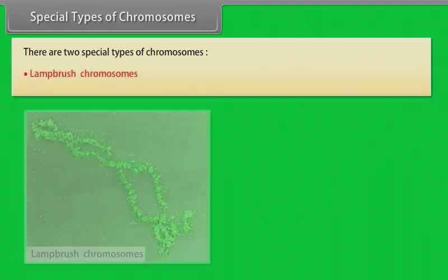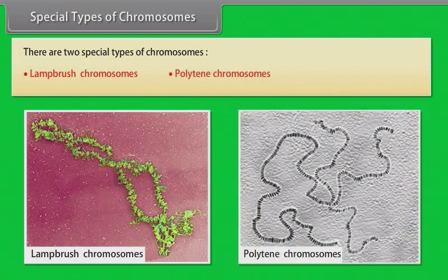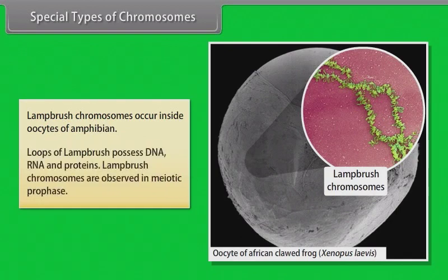Special types of chromosomes: There are two special types of chromosomes — lampbrush chromosomes and polytene chromosomes. Lampbrush chromosomes occur inside oocytes of amphibians. The loops of lampbrush chromosomes possess DNA, RNA, and proteins.